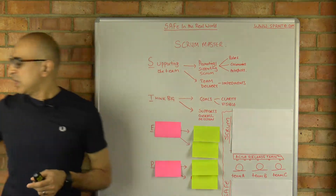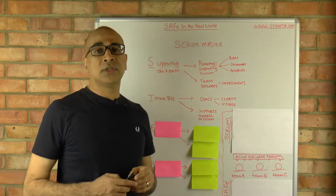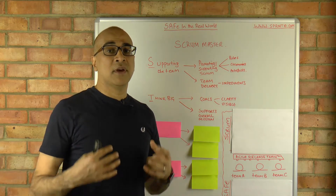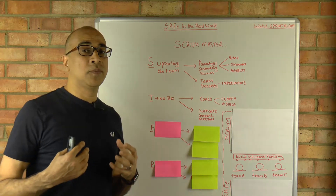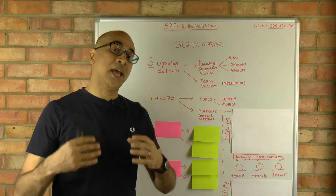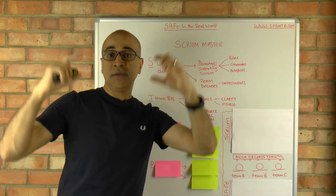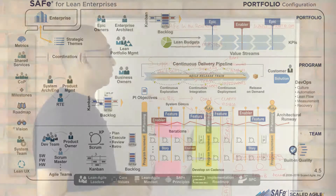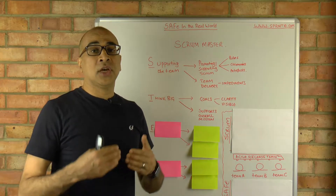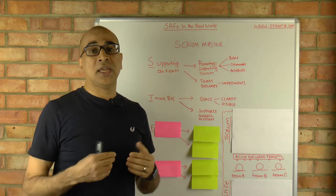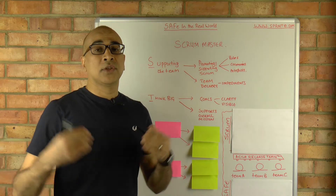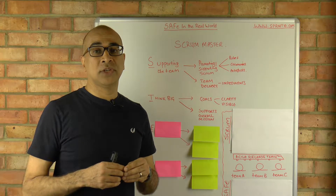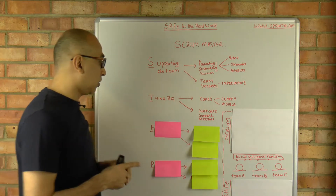In a SAFe implementation, the Scrum Master would be working with what's known as the Release Train Engineer, who sits at the program tier — the second tier in the SAFe big picture. The Scrum Master would need to work with the Release Train Engineer to ensure the team's delivery is supporting the overall mission and that the train is on track.